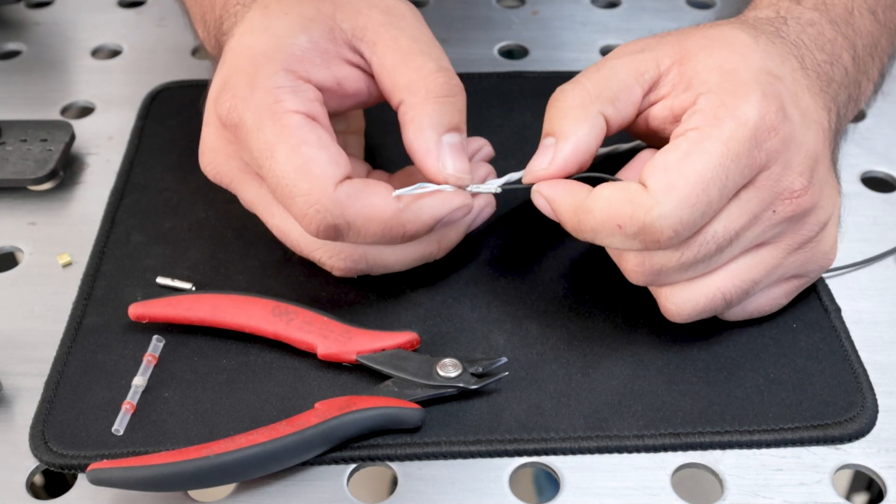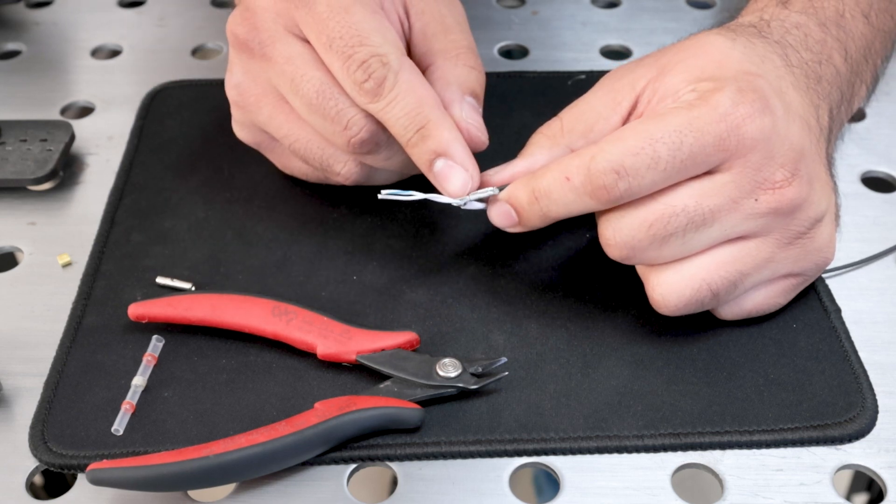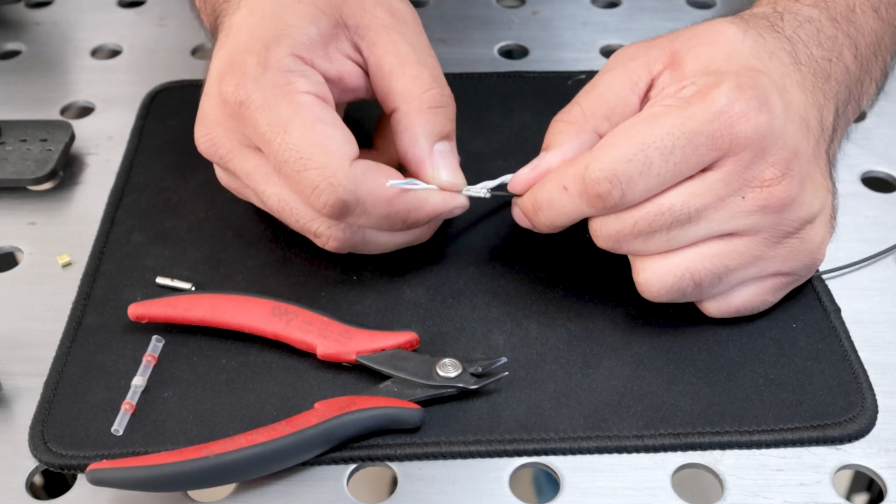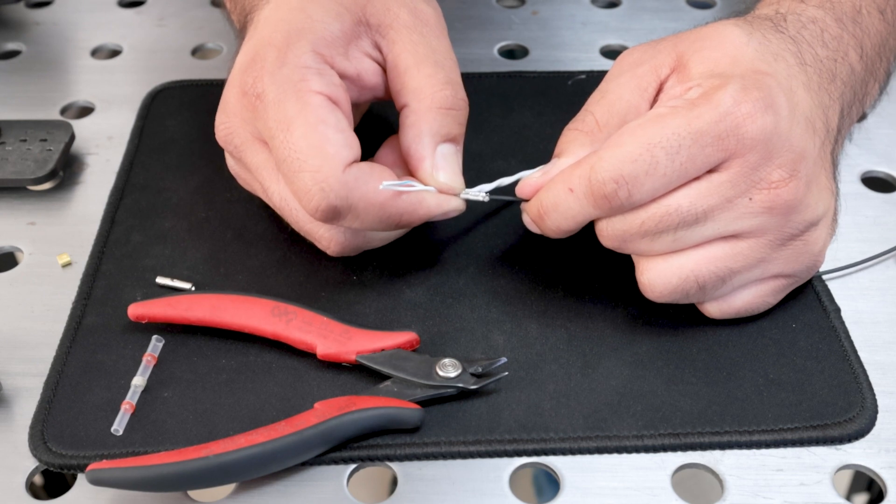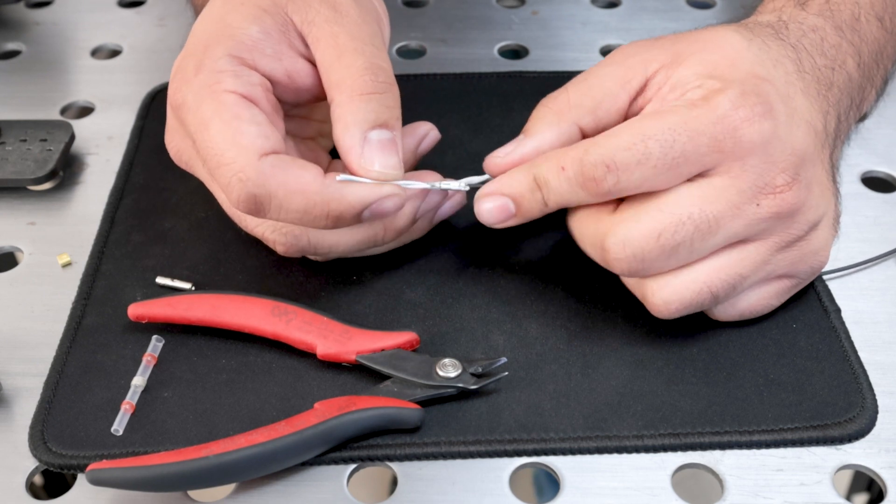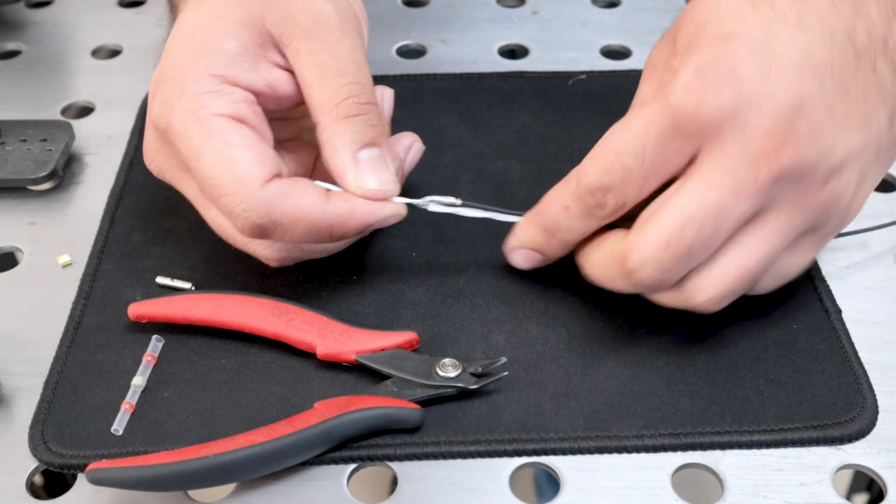If you pull hard enough on this, you might hurt the end of this shield a little bit. But really, this is more force than I think anyone would be putting on a wire harness, except if you're unbolting something and you forgot to undo the ground.